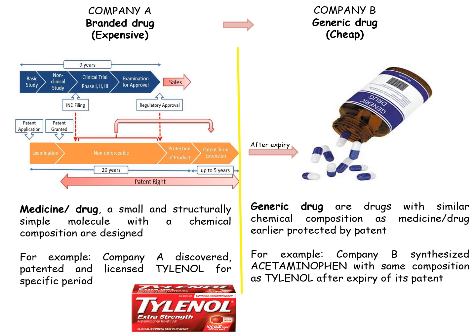We will be differentiating between branded drugs and generic drugs as an introductory topic. If a company A makes a branded drug, they can file a patent for that product and get the rights to use that drug. As soon as the patent rights are over for that branded drug by company A, that drug is now eligible to be synthesized by any other company, let's say company B, who will call it a generic drug.